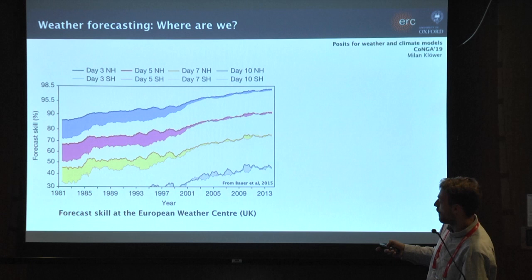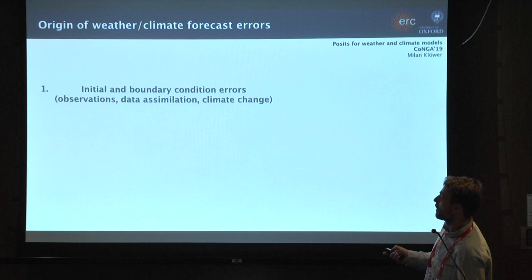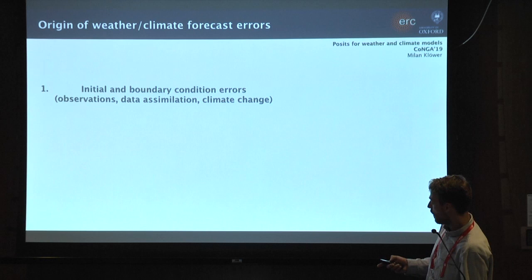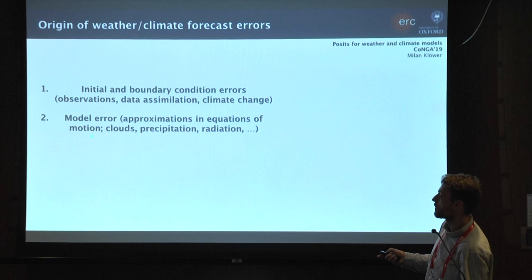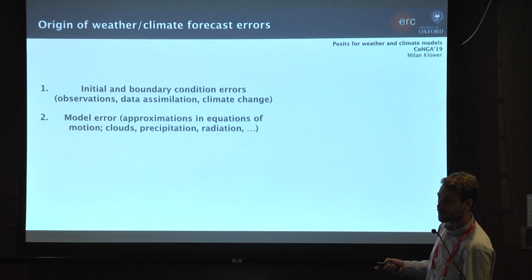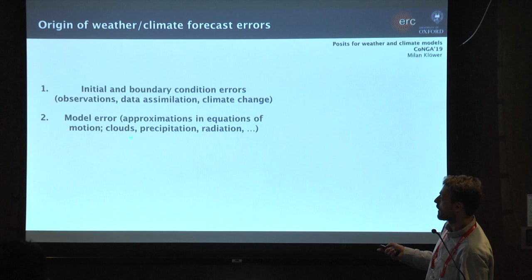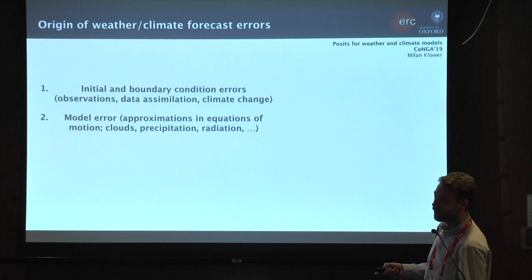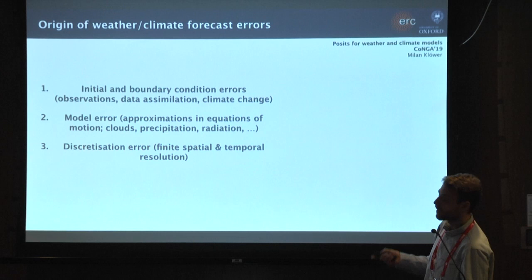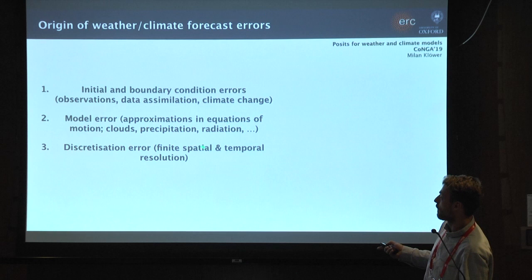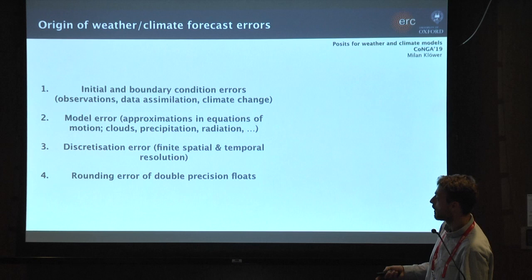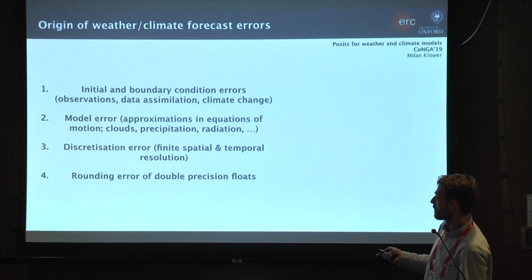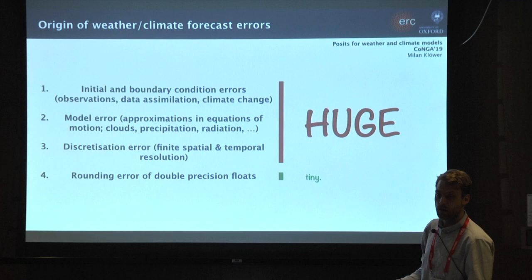The forecast is never perfect - where do these errors come from? First, we have a lot of initial and boundary condition errors: observations that are not perfect, the way you assimilate your data, and in terms of climate change, boundary conditions - we don't know what humans are going to do. Secondly, there's model error - the equations of motion use a lot of approximations, so the model is not reality. Processes like clouds, precipitation, and radiation use heuristic equations. Third, we have discretization error when going from continuous to discrete equations with finite spatial and temporal resolution. Fourth, we have rounding errors, but traditionally using double precision floats, these rounding errors are really tiny compared to the others.